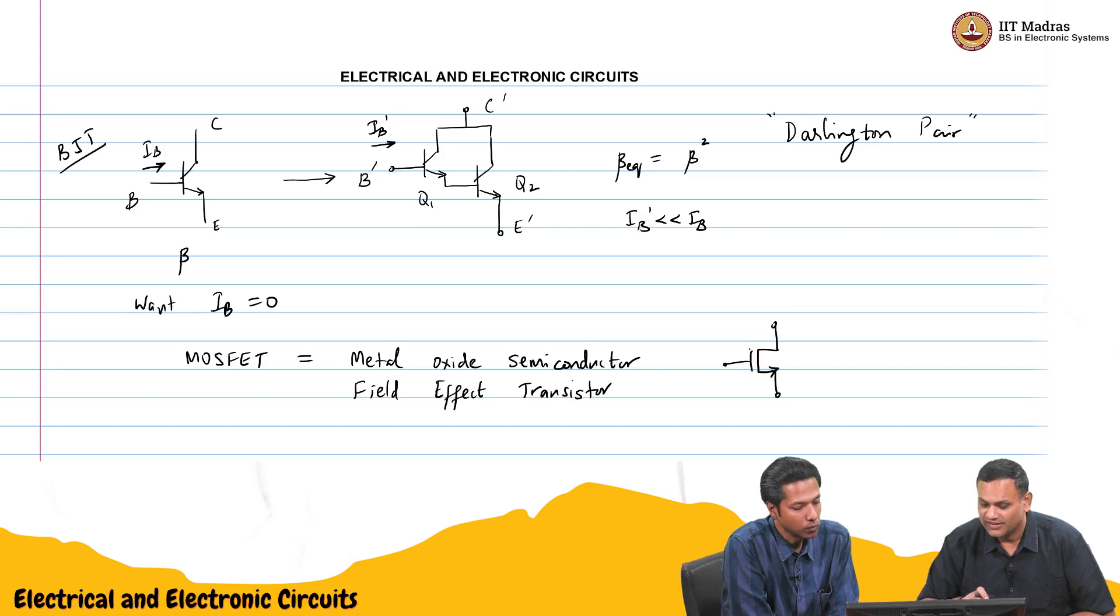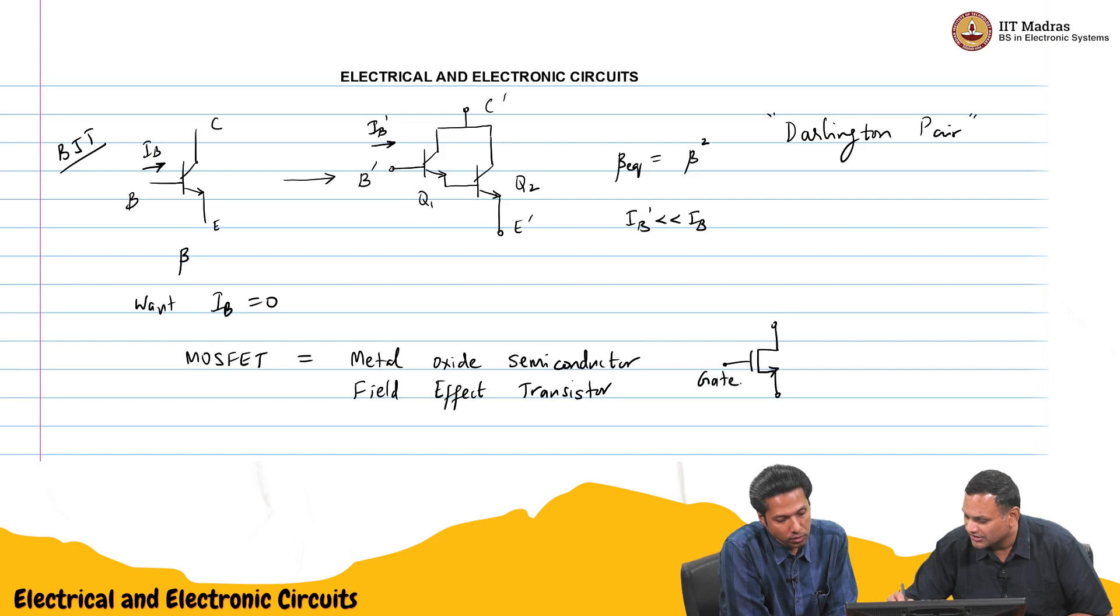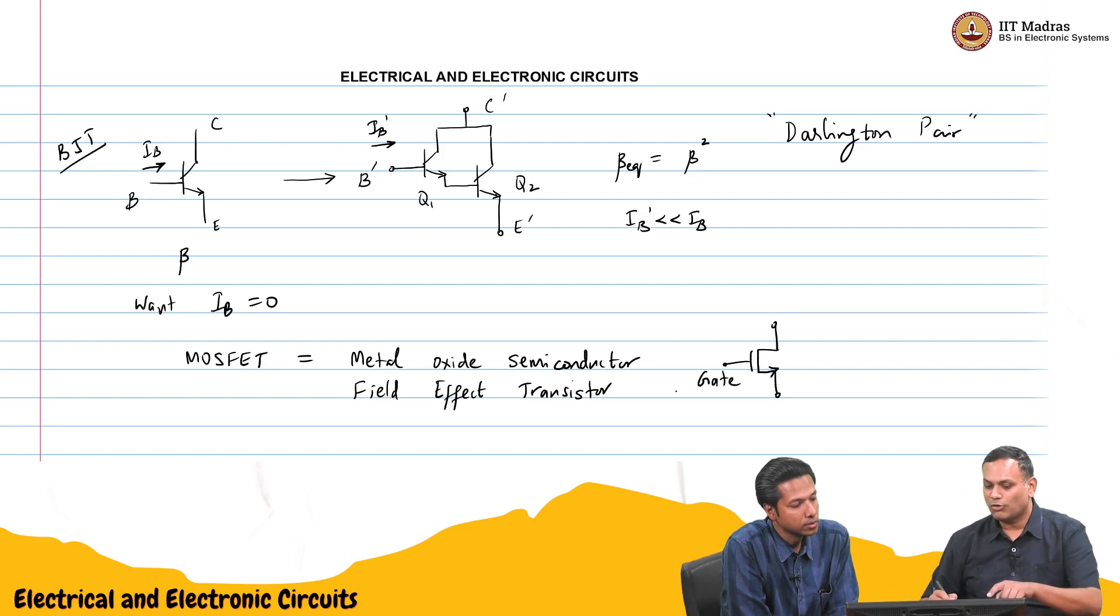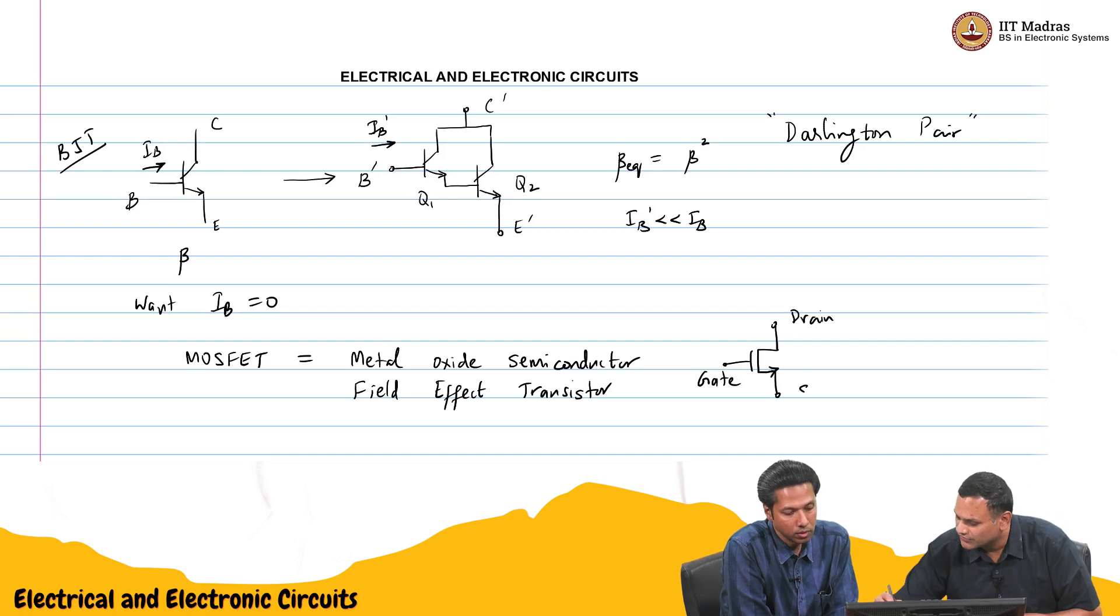So the corresponding to the base, you have the gate terminal. Corresponding to the collector, you have the drain terminal. And corresponding to the emitter, you have the source terminal. Okay. So instead of emitting, here is a source. It is a source. Correct.